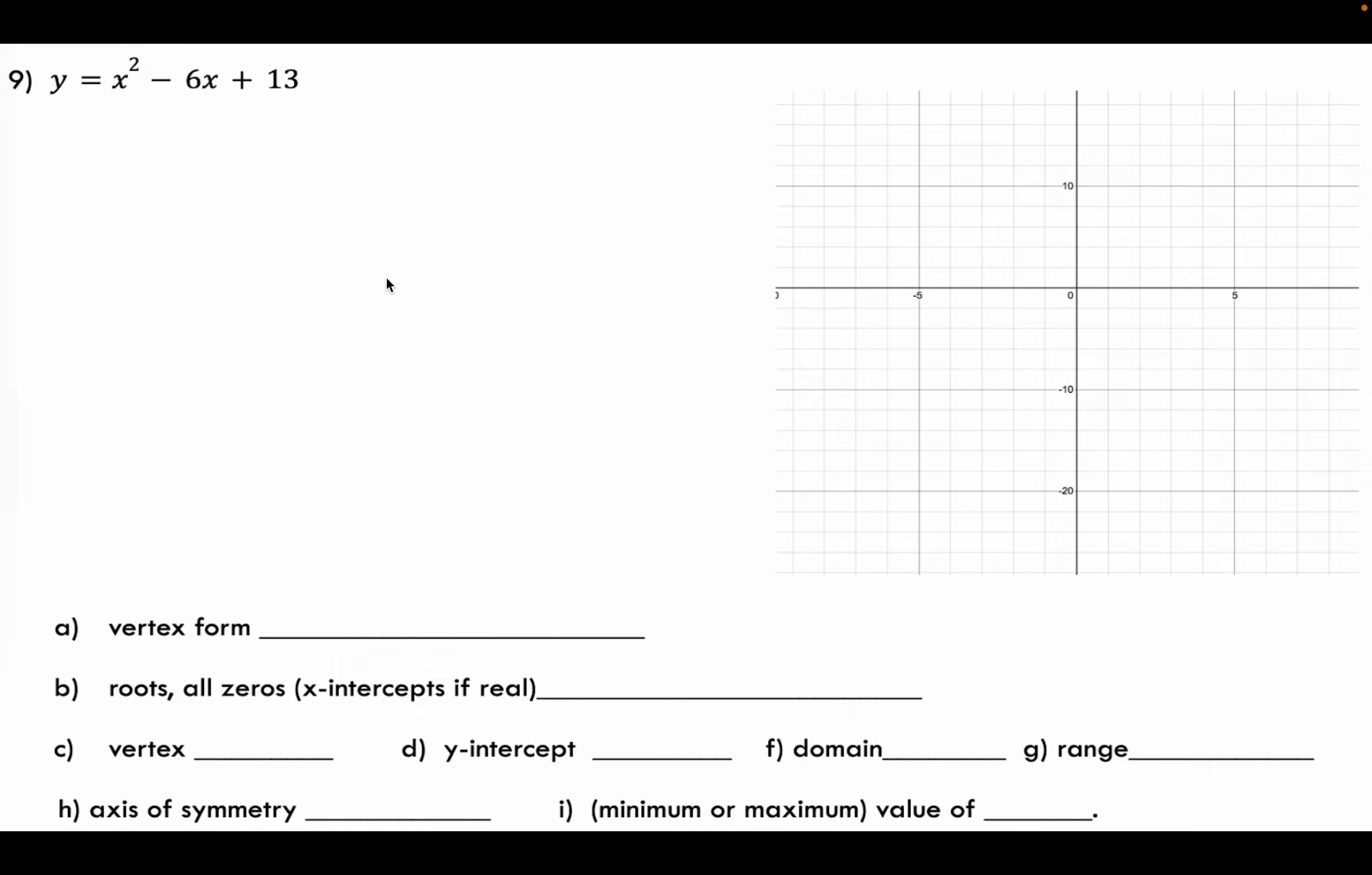Here is a function y equals x squared minus 6x plus 13. We're going to find a whole bunch of things about this function. The first thing to realize about the way it's written is it's already in standard form, ax squared plus bx plus c. So if you plug in x equals zero, you can see that you would just get y equals 13. So your y-intercept is right there at positive 13. We could even put that in here on the graph with this little blue dot.